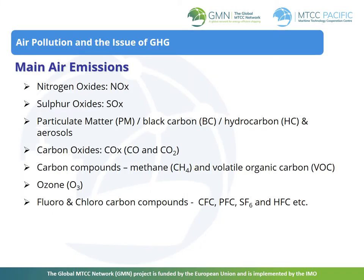Air pollution and the issue of GHG. Air pollution and the climate system, GHG emissions and environmental impact. Air pollution is the harmful or excessive quantities of substances introduced or emitted into the Earth's atmosphere by humans. CO2 is not a direct pollutant but has indirect impacts through the modification of the atmosphere's composition and properties.